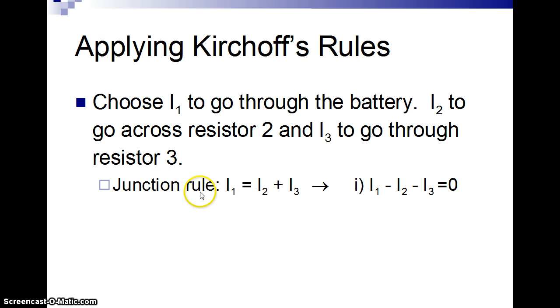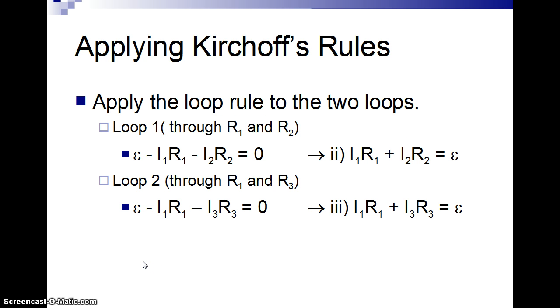So the junction rule, current one is going in, current two and three are coming out. So I can rewrite that. I'm going to call that my equation number one, Roman numeral I: I1 minus I2 minus I3 equals zero, because this is coming in, these two are going out. Then if we look at loop one, the battery provides a voltage. I1 going across R1 is a voltage drop. I2, R2 is a voltage drop. And then you get back to the starting point, zero. And then if I rearrange that, I'm going to call it Roman numeral two: I1, R1 plus I2, R2 equals the battery voltage.